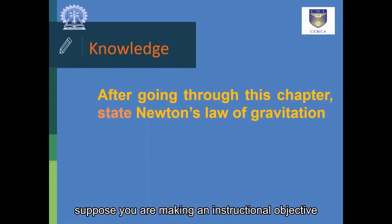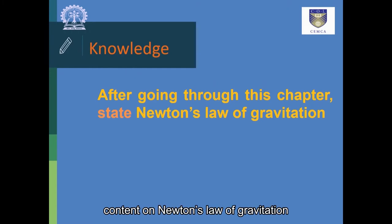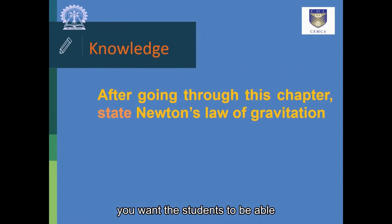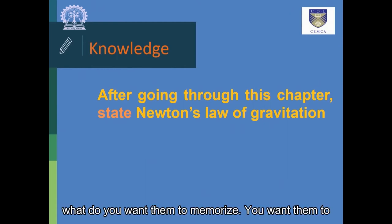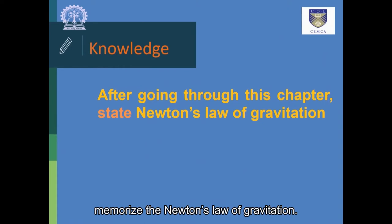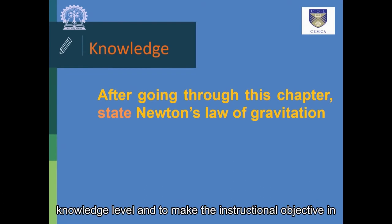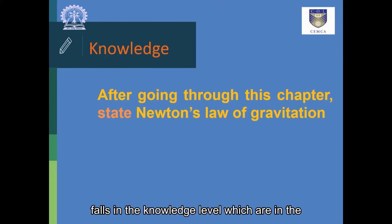If you are making an instructional objective on Newton's law, that means you want to develop content on Newton's law of gravitation, and your first instructional objective you want to make is in the knowledge level, which means you want the students to be able to memorize certain things. To make an instructional objective in the knowledge level, you need to use certain action verbs which fall in the knowledge level.